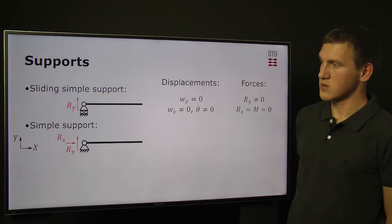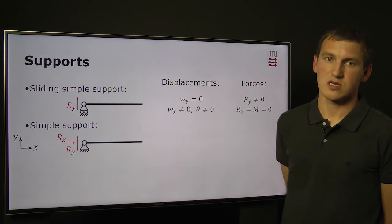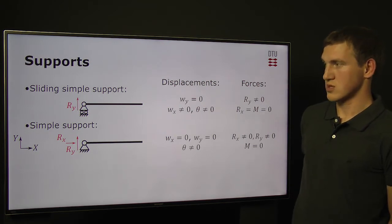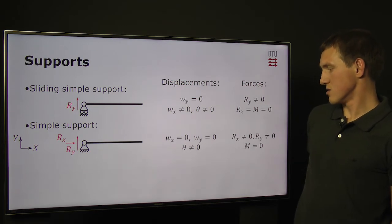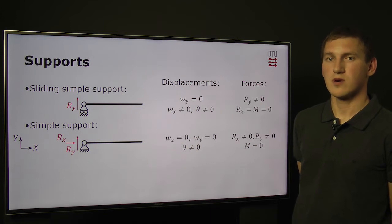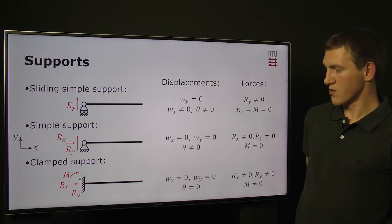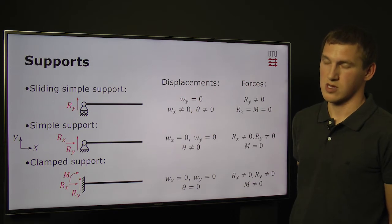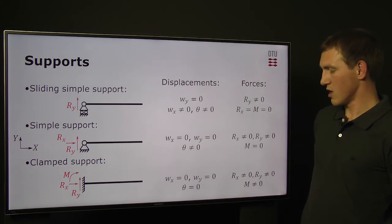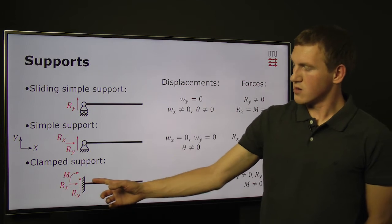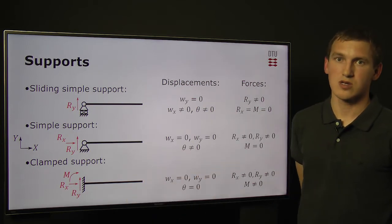The second is the simple support. In this case, the beam movement is restricted in both horizontal and vertical directions, while the bending rotation is not restricted. We have two non-zero reaction forces — the horizontal and the vertical — while the bending moment is zero. The last one is called clamped support. Here we restrict all three kinds of movements: displacement in horizontal and vertical direction and beam rotation. The reaction forces are all non-zero — both force components and bending moment. Very often the blade is considered as a beam clamped at the wind turbine hub, which is why this type of support is very interesting for our case.